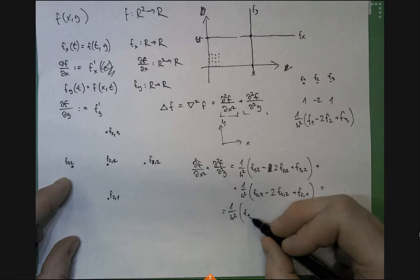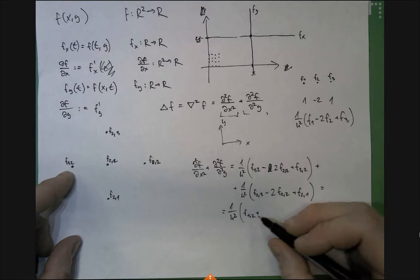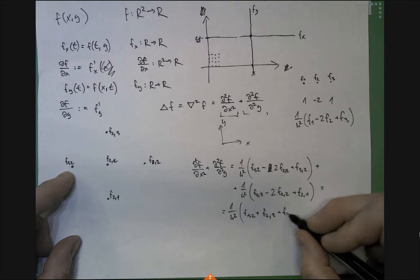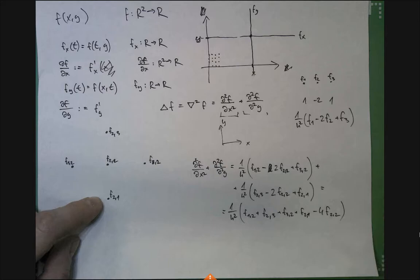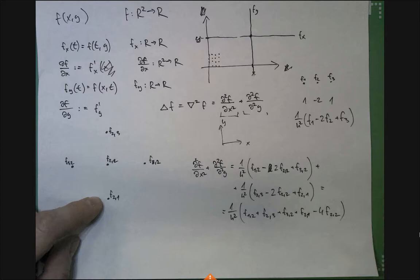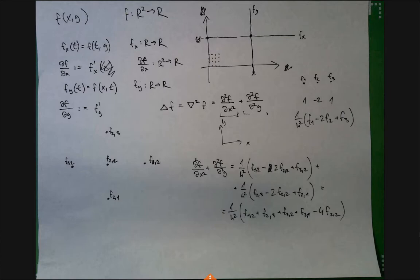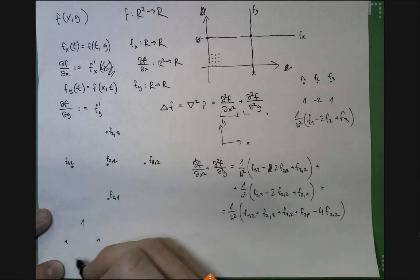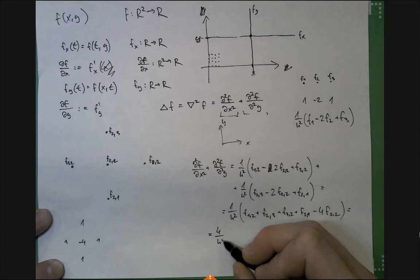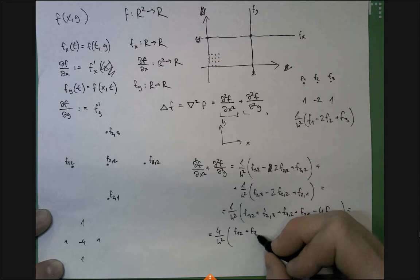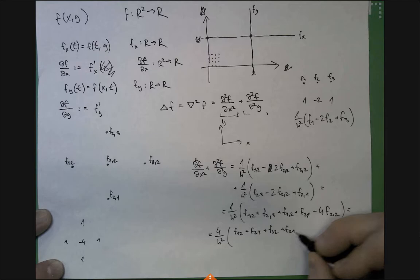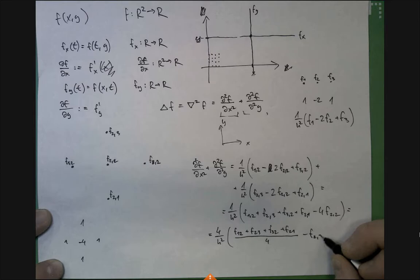Putting it together: f_{1,2} + f_{2,3} + f_{3,2} + f_{2,1} − 4·f_{2,2}. This is the famous 2D Laplacian stencil: the pattern is 1, 1, −4, 1, 1 (the four neighbors each get weight 1, the center gets −4). Equivalently, the Laplacian approximation equals (1/4)(f_{1,2} + f_{2,3} + f_{3,2} + f_{2,1}) − f_{2,2} — the average of the neighbors minus the center value.